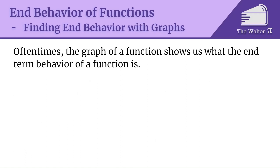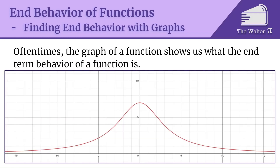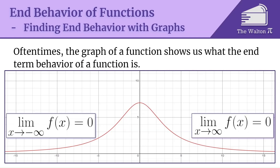Oftentimes if we just graph the function, that tells us what the end behavior is. If we look at this graph — this type of function is often called a witch of Agnesi — we can see what happens as the inputs get really far from zero. In both cases, as x goes towards infinity or negative infinity, the end behavior is the function getting really close to zero, so it's heading down to zero.